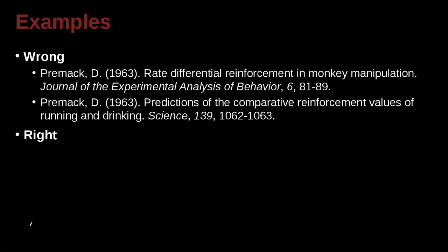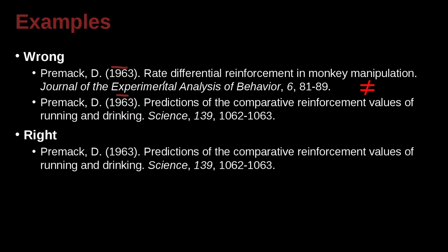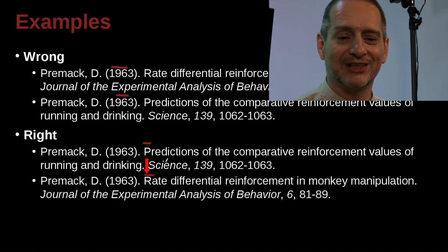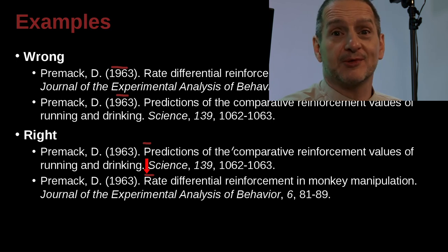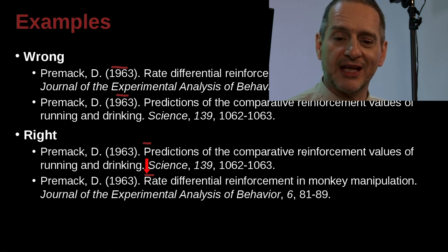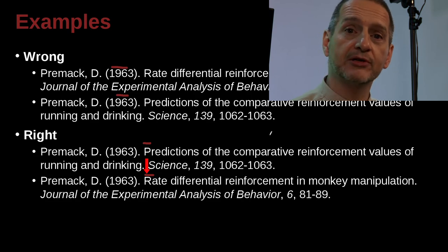Premack 63 and Premack 63 — now we've got this problem: exact same name and the exact same date, but they are different papers. How do we decide which one goes first? We look at the title — P comes before R alphabetically, so that one goes first. What if the first word of the title were the same? Then we go to the next word, and the next word, and keep going down the list until we find the next difference. The one that comes first alphabetically goes first.